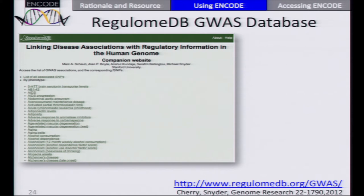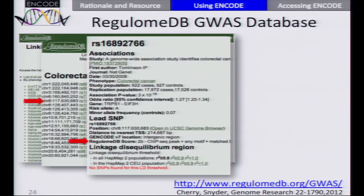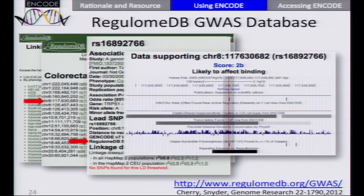Another feature RegulomDB has is a GWAS database — a list of curated GWAS studies done by other groups, presented as hyperlinks. For each one you can click through, see the list of variants, see what study associated that variant with a trait or disease, and what the evidence is that this is or is not a regulatory element.